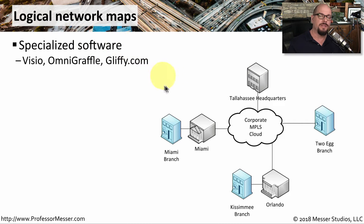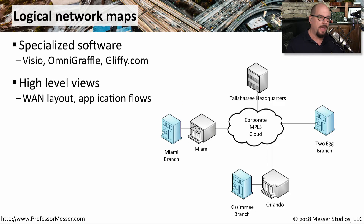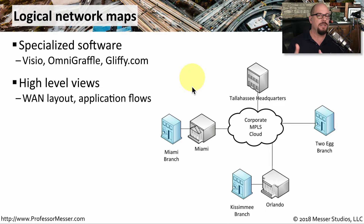Regardless of the type of map you plan on creating, you want to use some specialized software to do this. In Windows, you might want to use Visio. Mac OS has OmniGraffle. And there are also third-party websites that allow you to create these graphics inside of your browser itself. These would be high-level views showing how a wide area network may be connected, or showing the logical communication of an application as it goes from a web server into middleware and then the database back end.